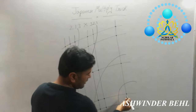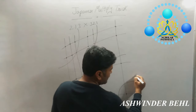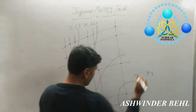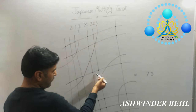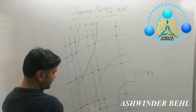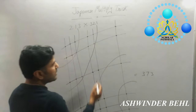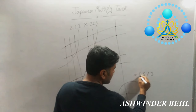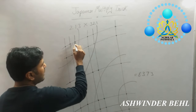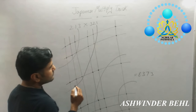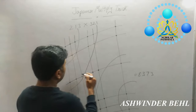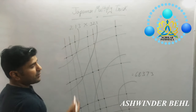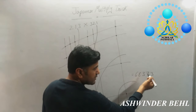Now you will count how many points are there: 1, 2, 3. So write down 3. Now you will add the next group: 1, 2, 3, 4, 5, 6, 7 — that is 7. Next: 2 plus 2 is 4, plus 4, 5, 6, 7, 8, 9, 10, 11, 12, 13 — so 3 is written, carry 1. Then: 1, 2, 3, 4, 5, 6, 7, plus 1 carry is 8. And the leftmost group: 1, 2, 3, 4, 5, 6 — write down 6. So the answer: 213 multiplied by 321 is 68,373.